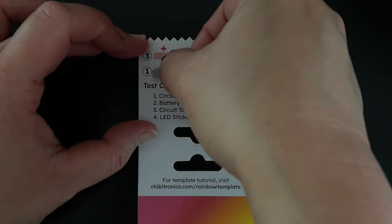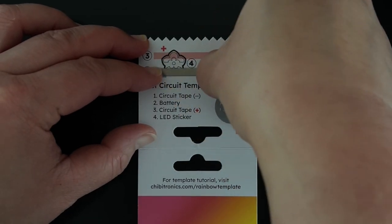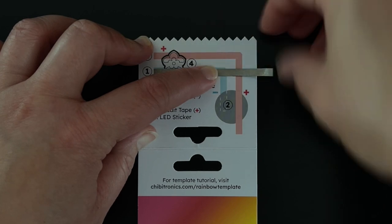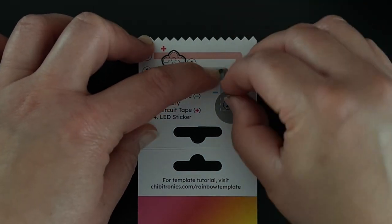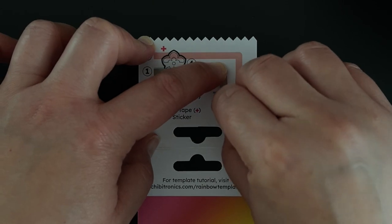To start, apply a little double-sided adhesive over the battery circle outline to help hold the battery in place. Then apply a piece of circuit tape following the blue negative line. When you reach a corner, you can simply fold the tape forward into the next direction.